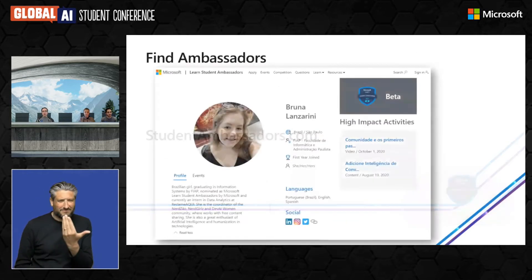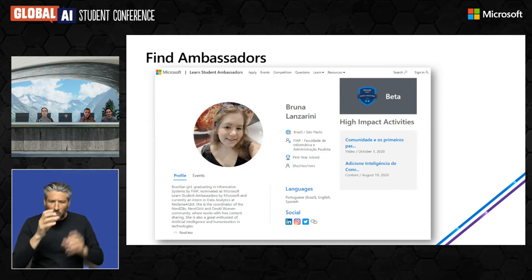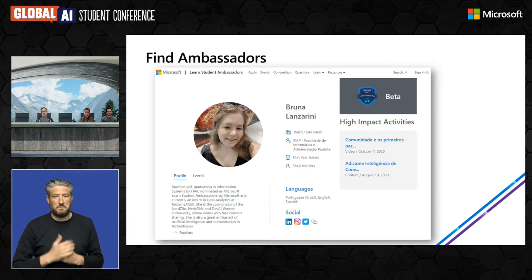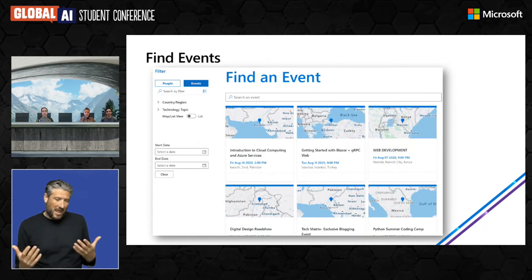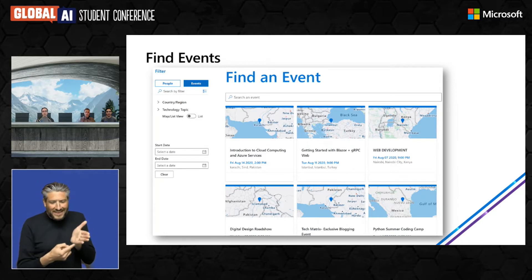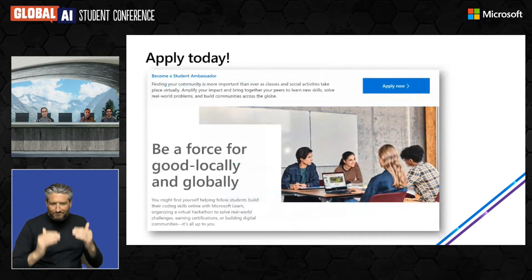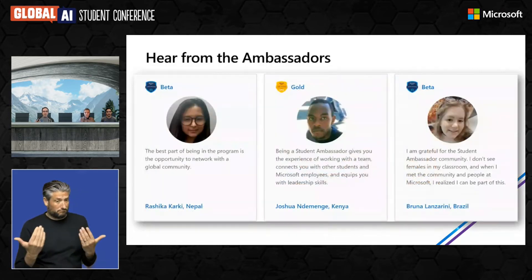All of this is online at studentambassadors.com. You can actually find ambassadors — search by country, city, university, or language. You can see all the amazing things ambassadors are doing across the globe and get links to their social profiles. Our ambassadors also post their events on the site, so especially now that everything is virtual, you can join any of these events to learn more about specific technology topics. You can also apply on the website — we'd love to bring you on board if you have that passion to share with the community.